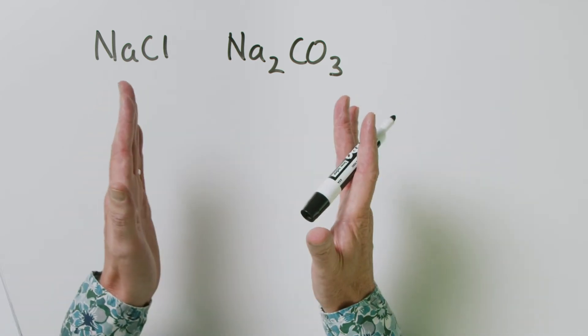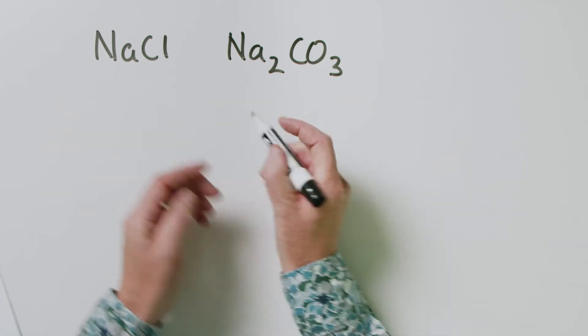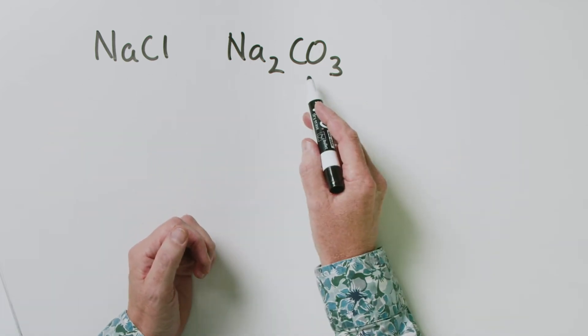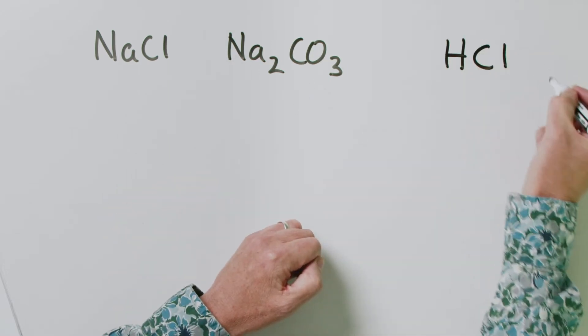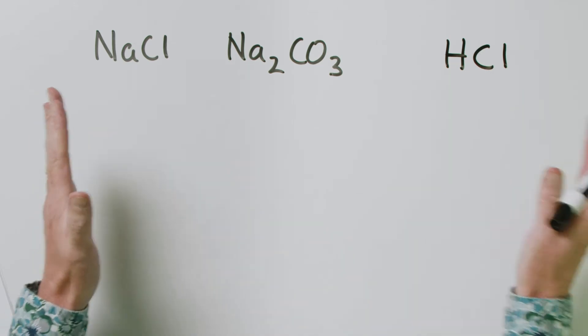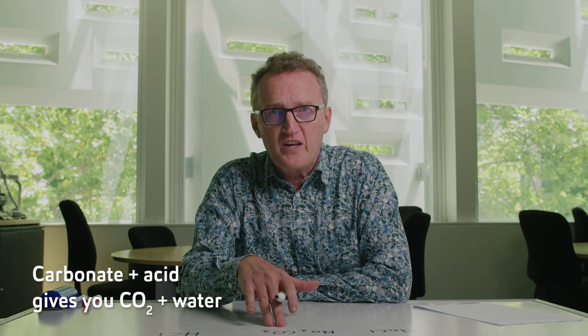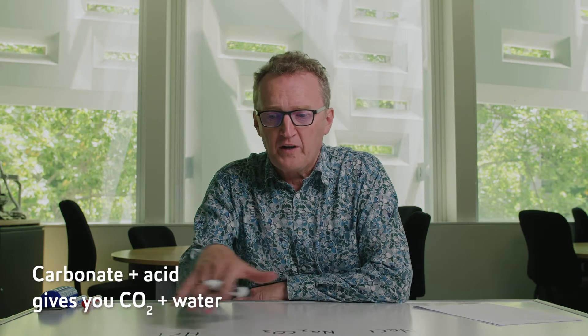So how are we going to do this? We're going to take this mixture, dissolve it up, and react it with HCl — hydrochloric acid. Now, to the sodium chloride, that will do absolutely nothing. To the sodium carbonate, it's going to have a chemical reaction. Carbonate plus acid gives you CO₂ plus water.